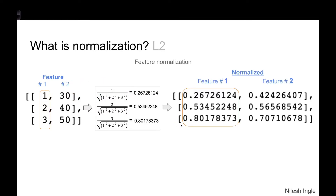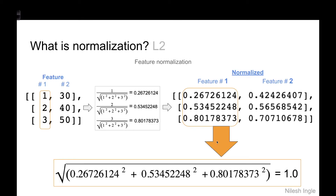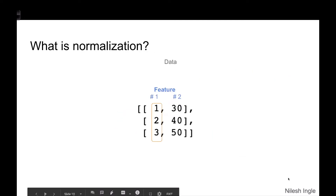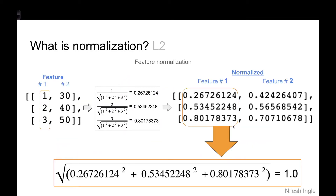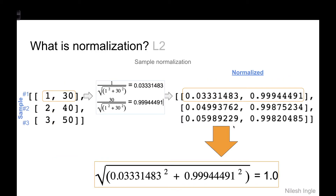The resulting normalized array brings down the differences in ranges between the two features. The original values were less than 10 for one feature and much greater than 10 for the other, but after normalizing they are all in a range below one. For L2 normalization, if we take these normalized values, square them, and take the square root of their sum, they add up to one — confirming that the vector length is one, or a unit vector.